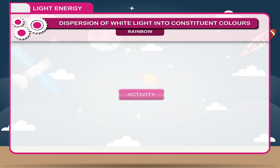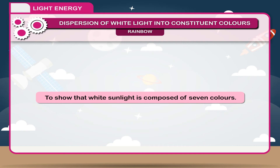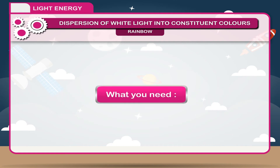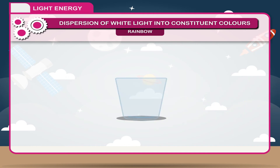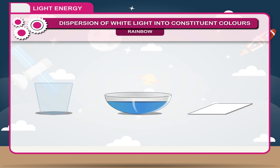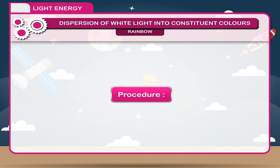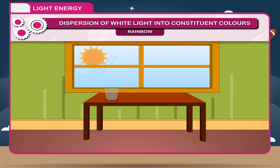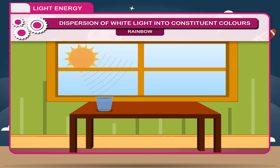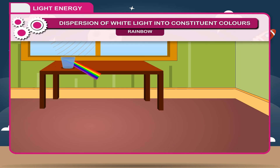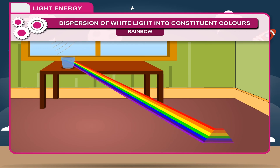Activity — To show that white sunlight is composed of seven colours. What you need: a glass tumbler, water, white paper. Procedure: Place a glass tumbler on a window in direct sunlight. Fill the glass to the brim with water. Find the rainbow that forms on the floor. Place a sheet of white paper where the rainbow falls. Identify the colours in your rainbow.